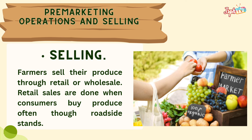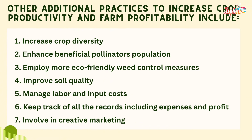Selling: farmers sell their produce through retail or wholesale. Retail sales are done when consumers buy produce, often from roadside stands. Additional practices to increase crop productivity and farm profitability include increasing crop diversity, enhancing beneficial pollinators' population, employing eco-friendly weed control measures, improving soil quality, managing labor and input costs, keeping track of records including expenses and profit, and involving creative marketing.